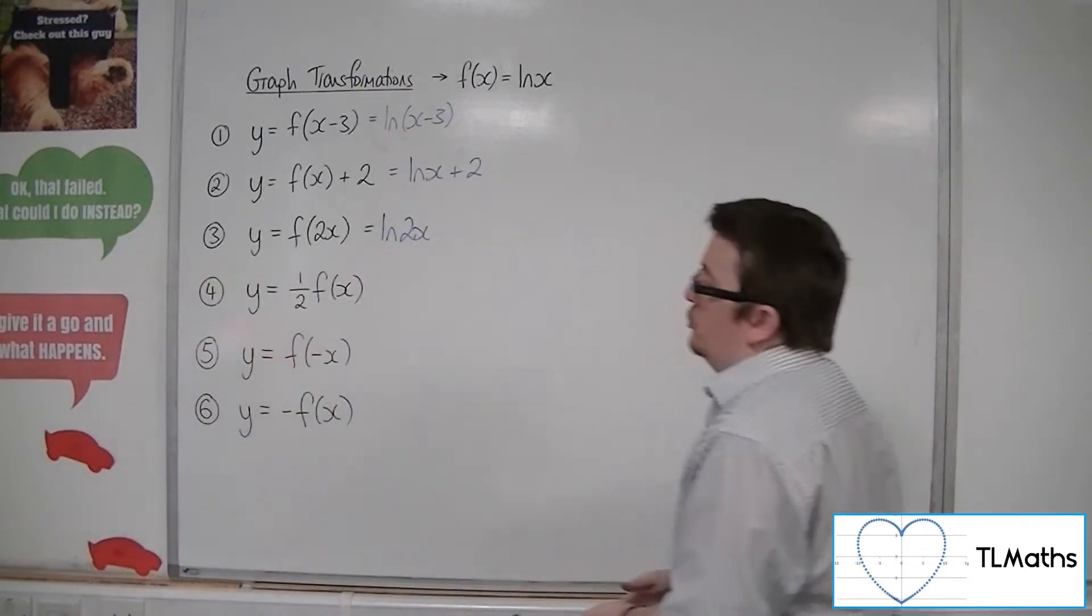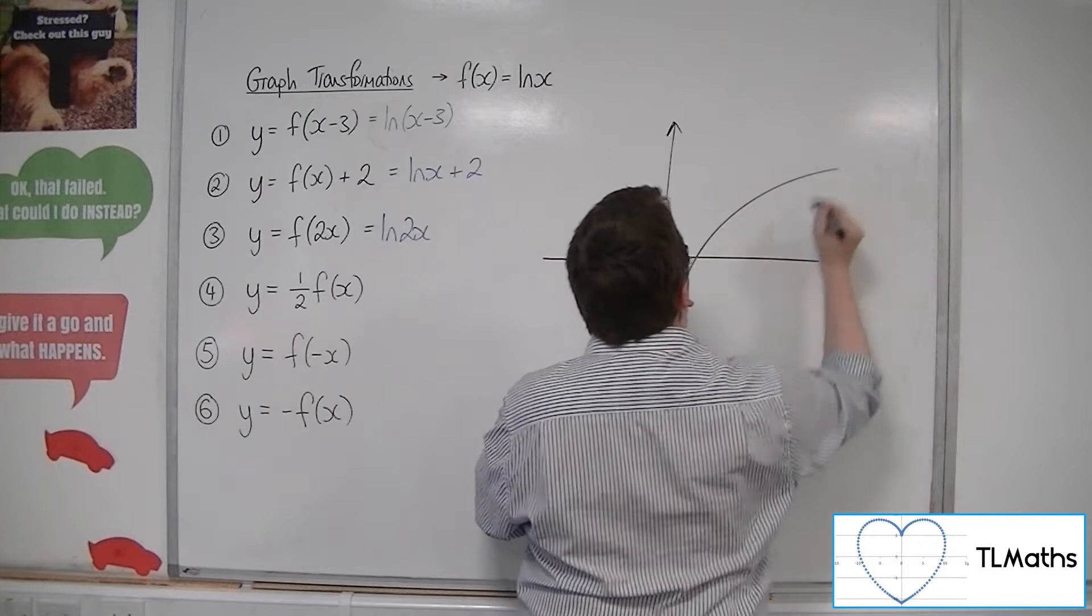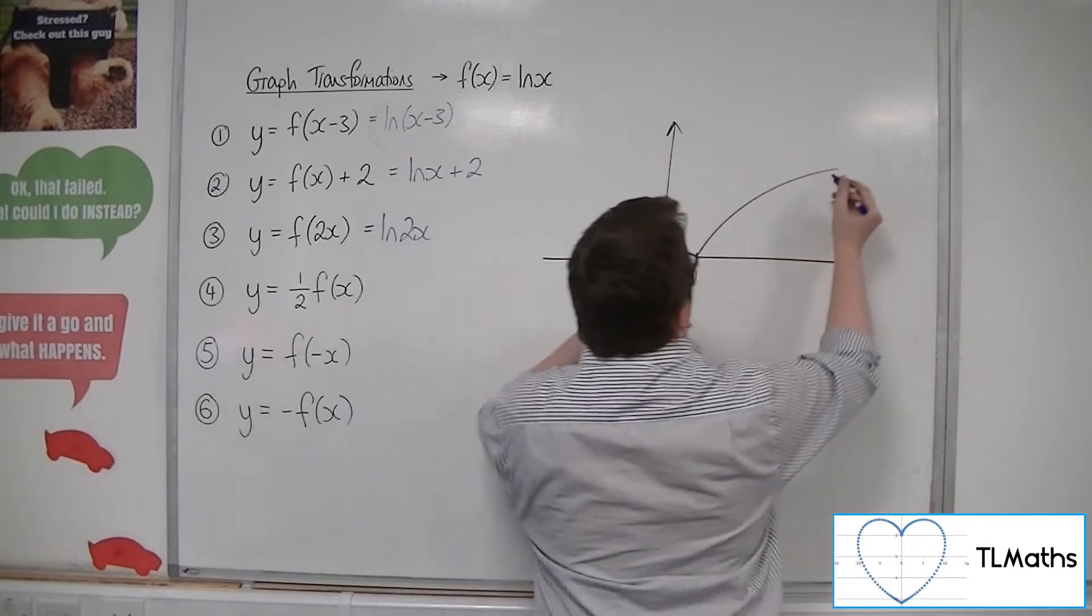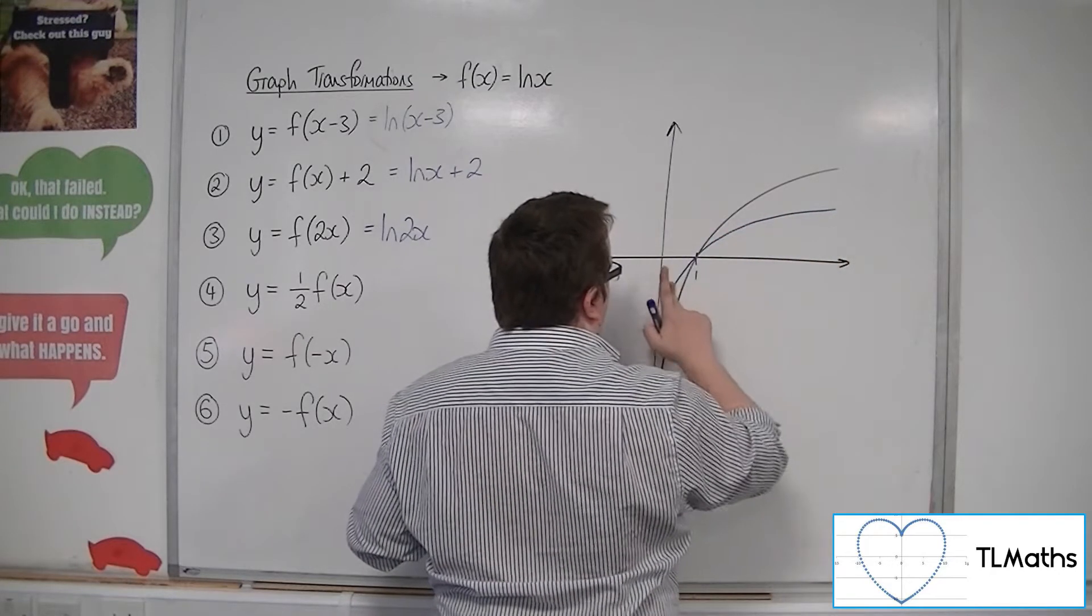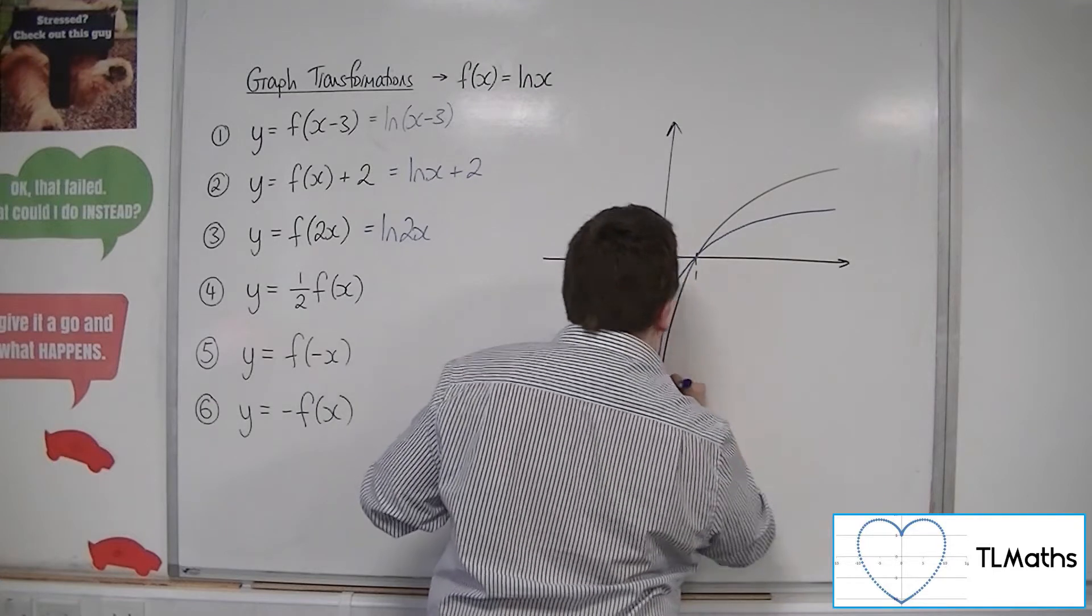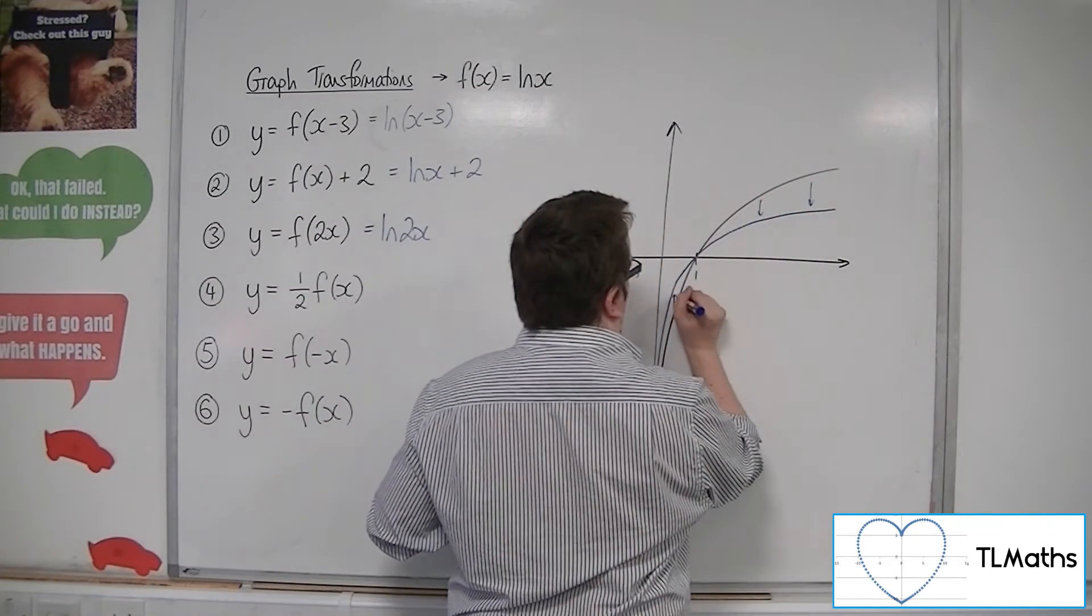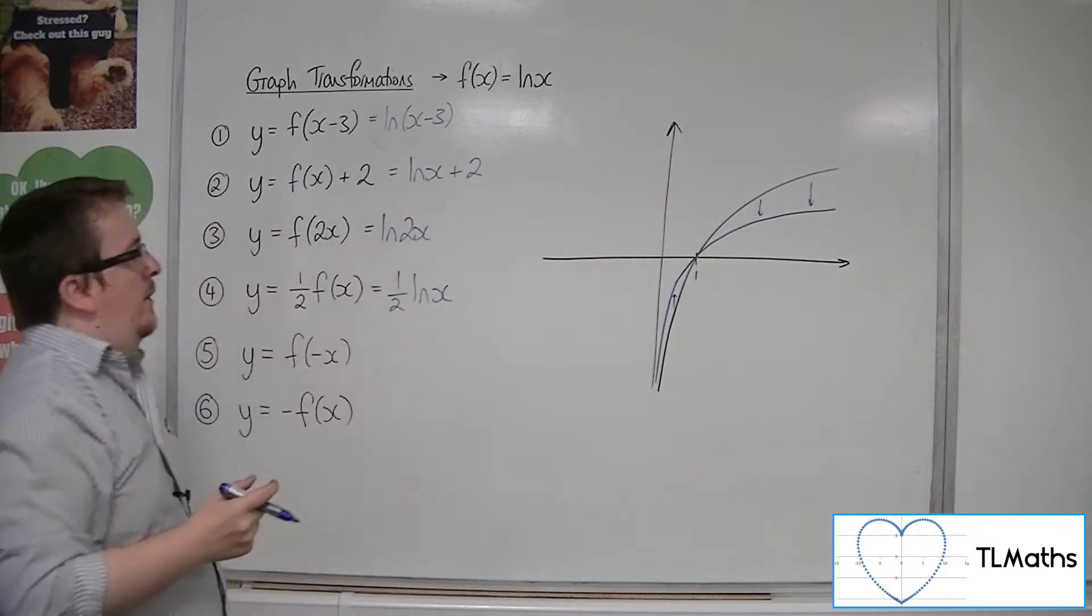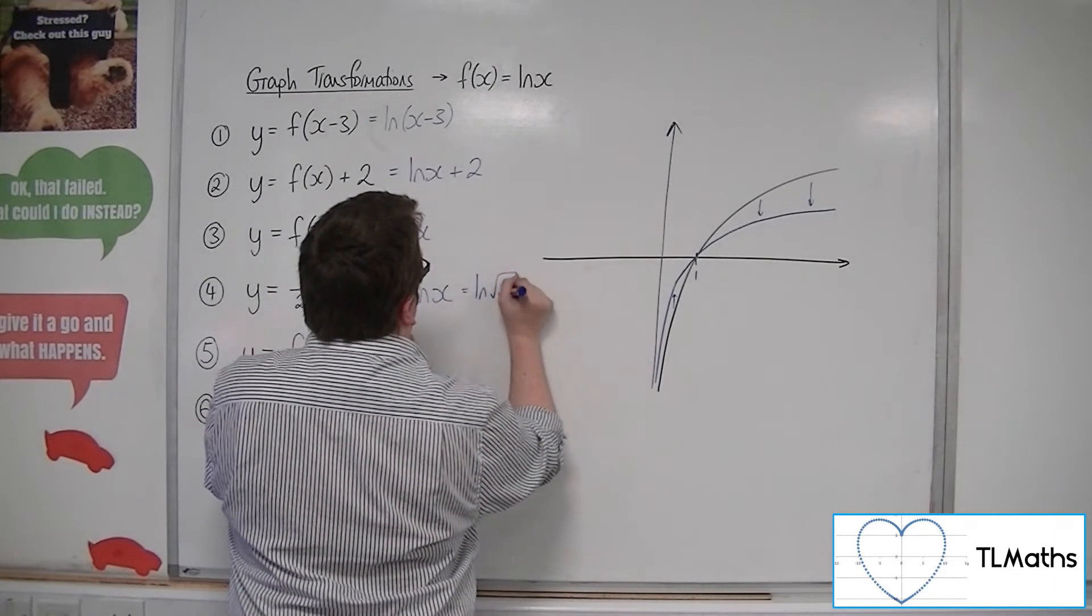Half f(x), so a stretch, a factor of half parallel to the y-axis. So every single point will have its y-coordinate halved. So it would look something like this. It's still going to go through 1. Something like that. So that every y-coordinate will be halved. And that would be 1/2 ln(x). Now, if you're knowing your log laws at this point, then that's ln(x to the half), or ln(root x). These are the same.